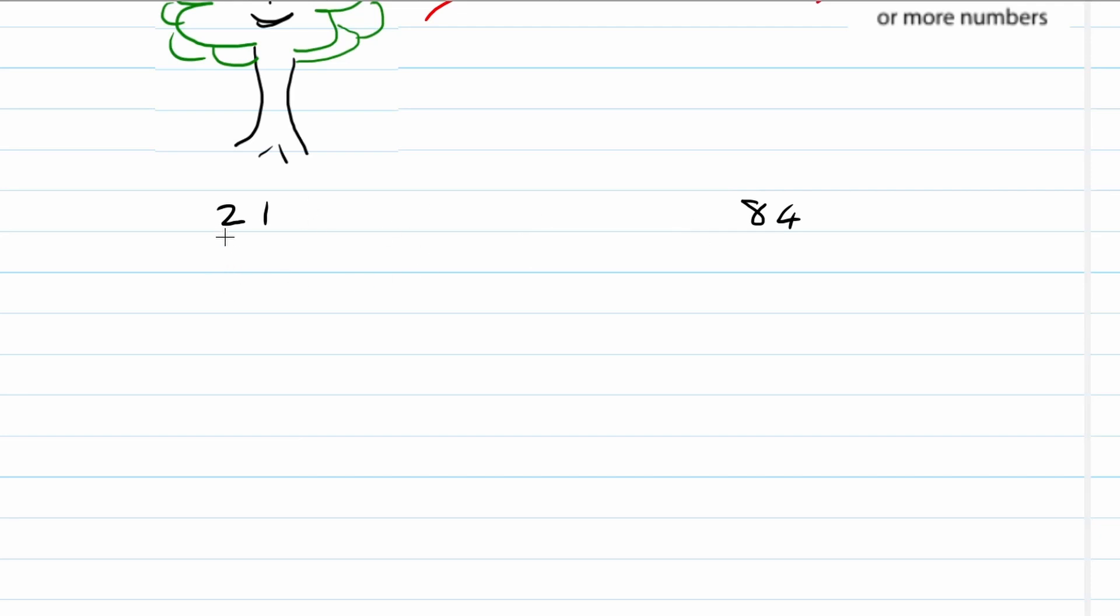So we're going to use our factor tree now. Prime numbers is 2, 3, 5, 7 etc. Can 21 be divided by 2? No. But we can divide 21 by 3. What does it become? 7.